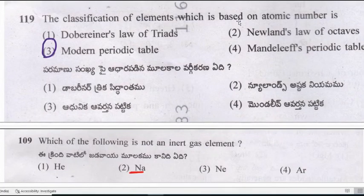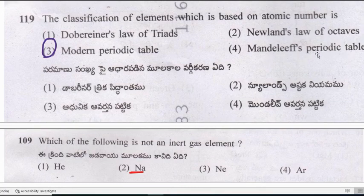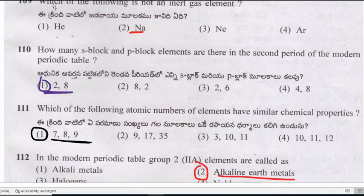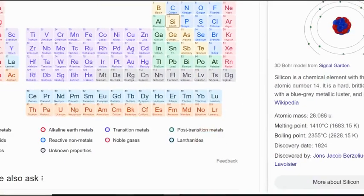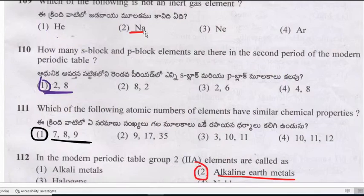Question: The classification of elements which is based on atomic number is the modern periodic table. Newland's law of octaves and Mendeleev's periodic table are based on atomic weight. Question: Which of the following is not an inert gas element? Helium, neon, and argon are inert gases, also called noble gases. Sodium is not an inert gas element.